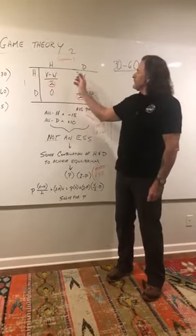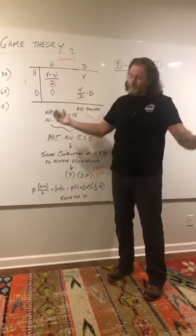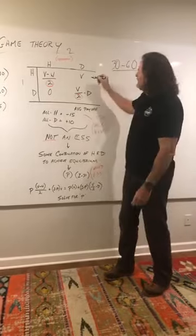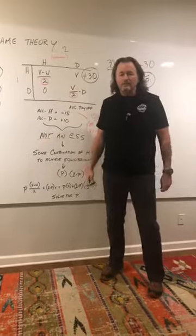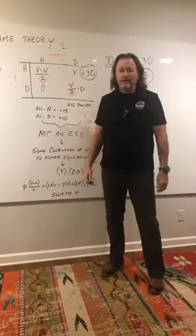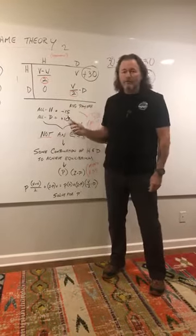Now, if he encounters an animal using the dove strategy, sweet, easy day, immediate plus 30 value, right then and there, because he just ran into a dove. That dove's either going to flee or just get the heck out of town. Either way, he's not going to fight him back.